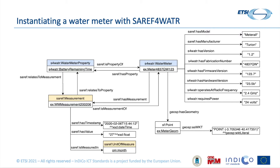If we want to instantiate, for example, a water meter using SAREF for water, we can define it with different attributes that either come from SAREF core, such as HASS model and HASS manufacturer, or have been explicitly defined for this extension — for example, those implementing the MBAS standard — such as the firmware version or the radio frequency in which it operates. For the water meter, we can define the geospatial location and also the different measures that we can make of the meter.